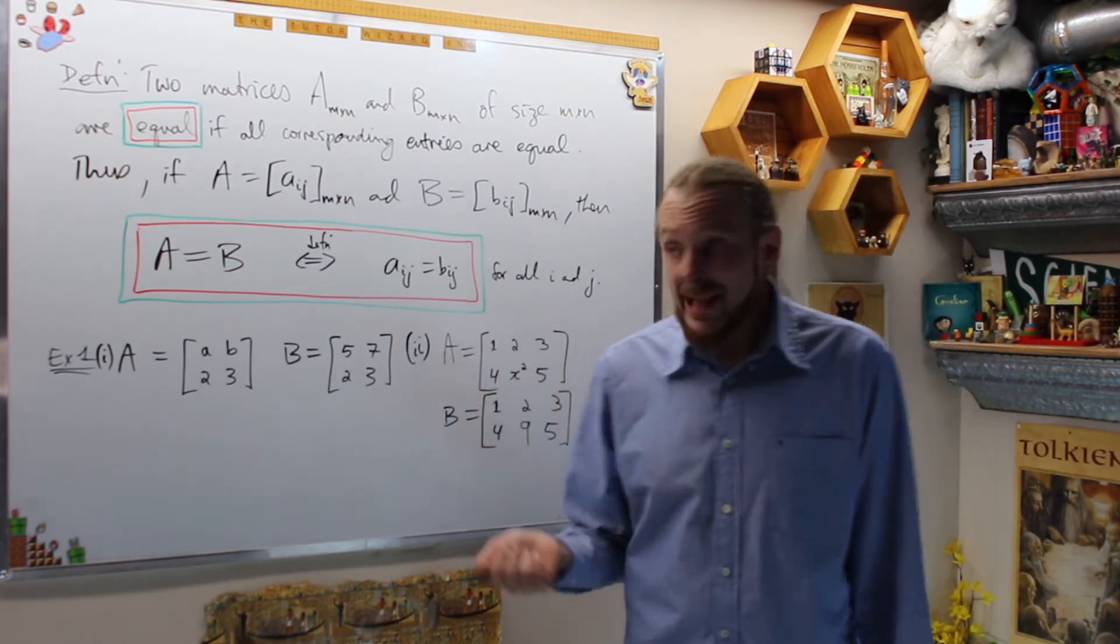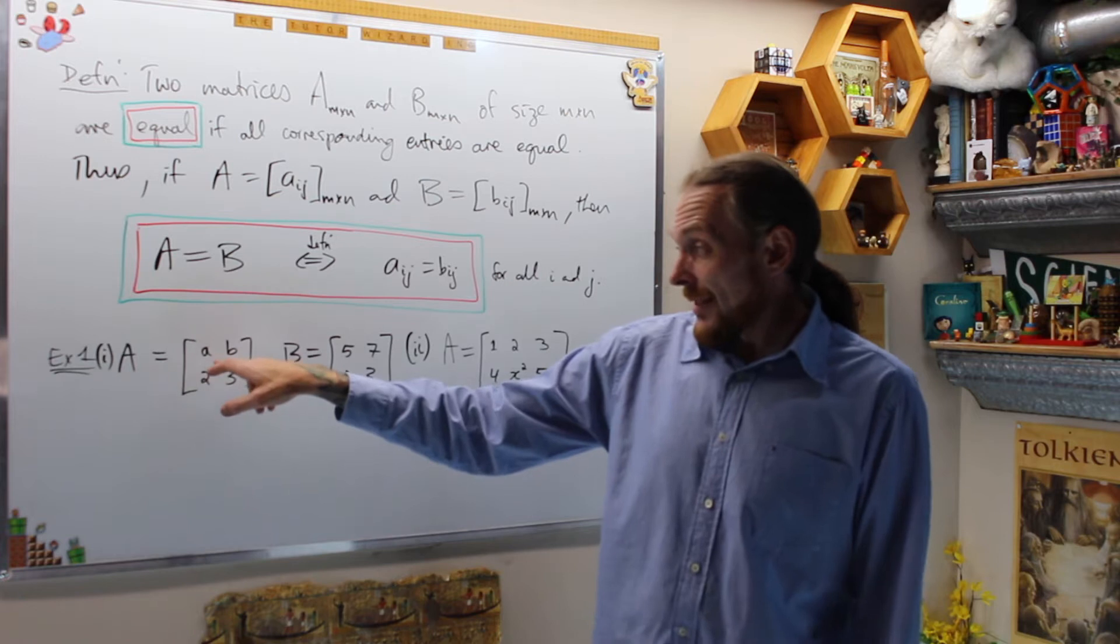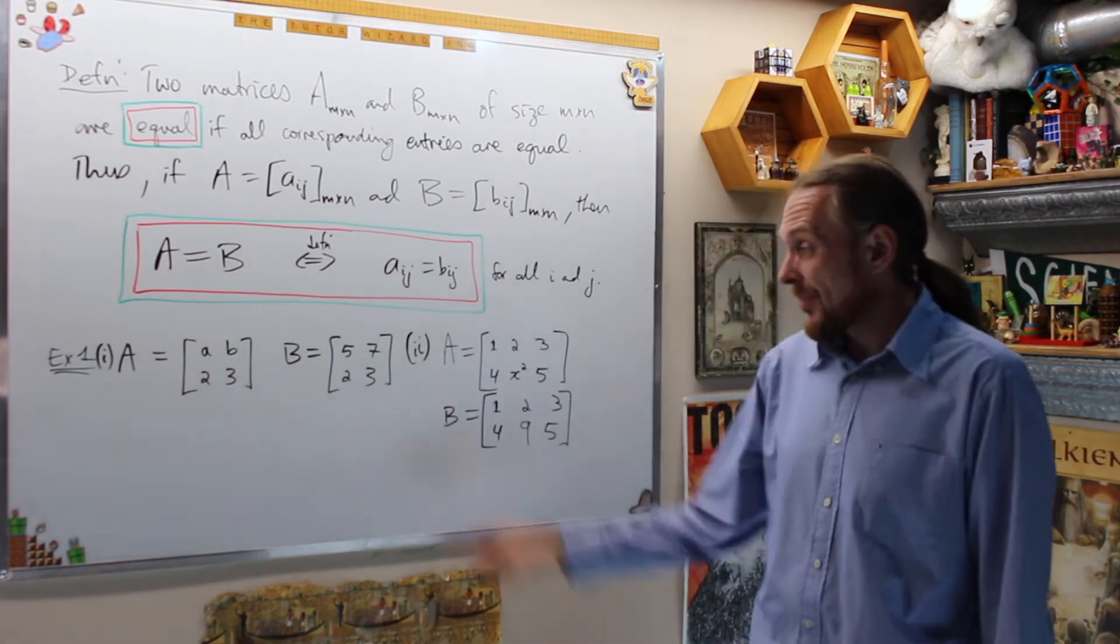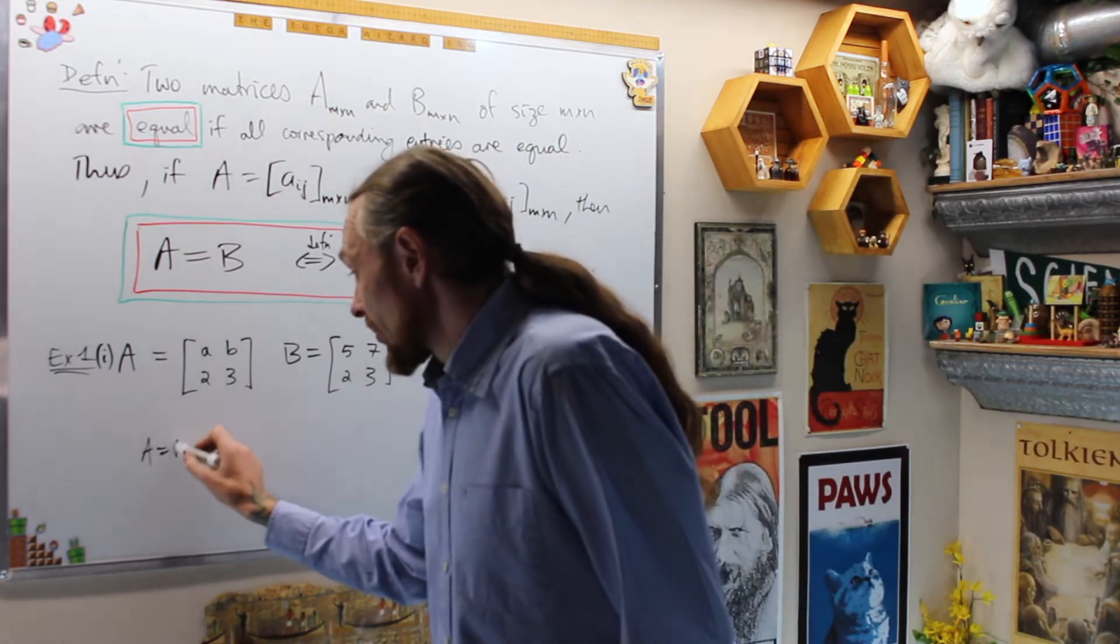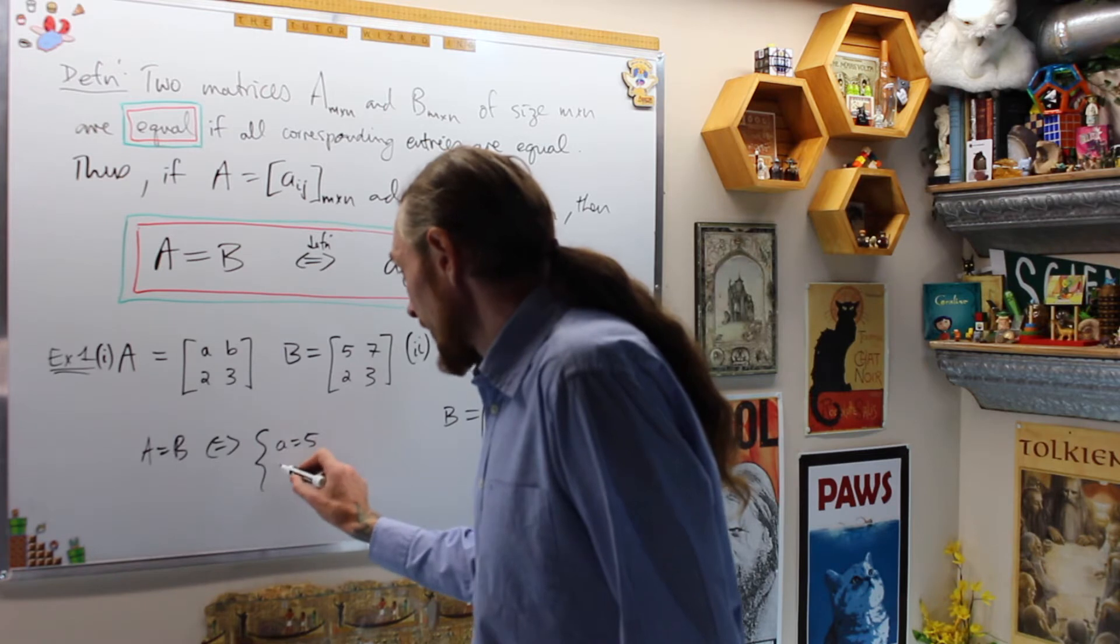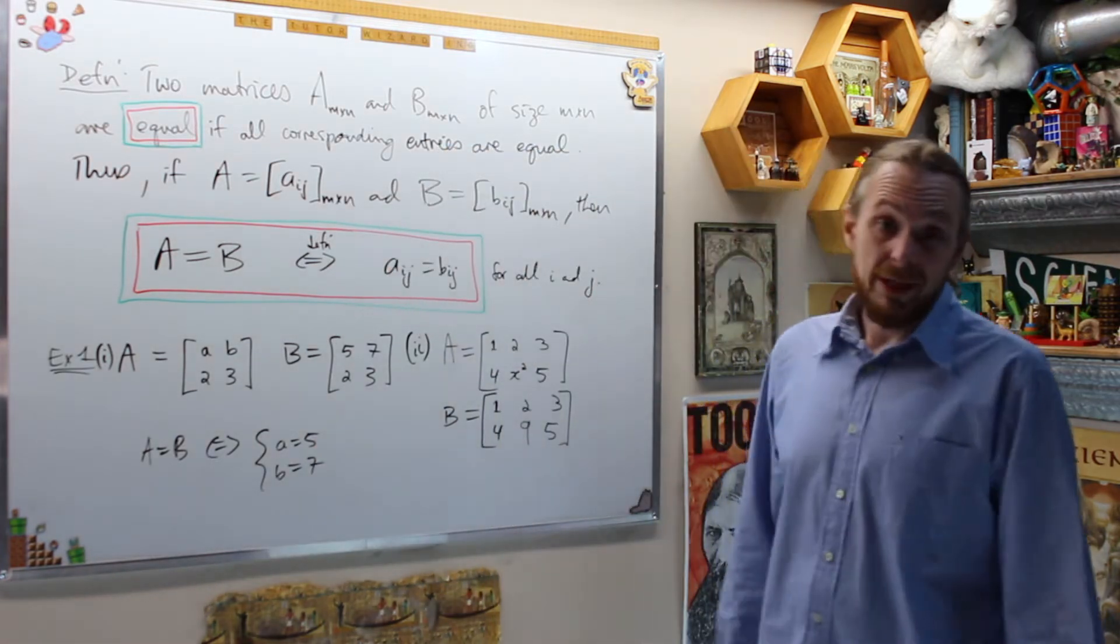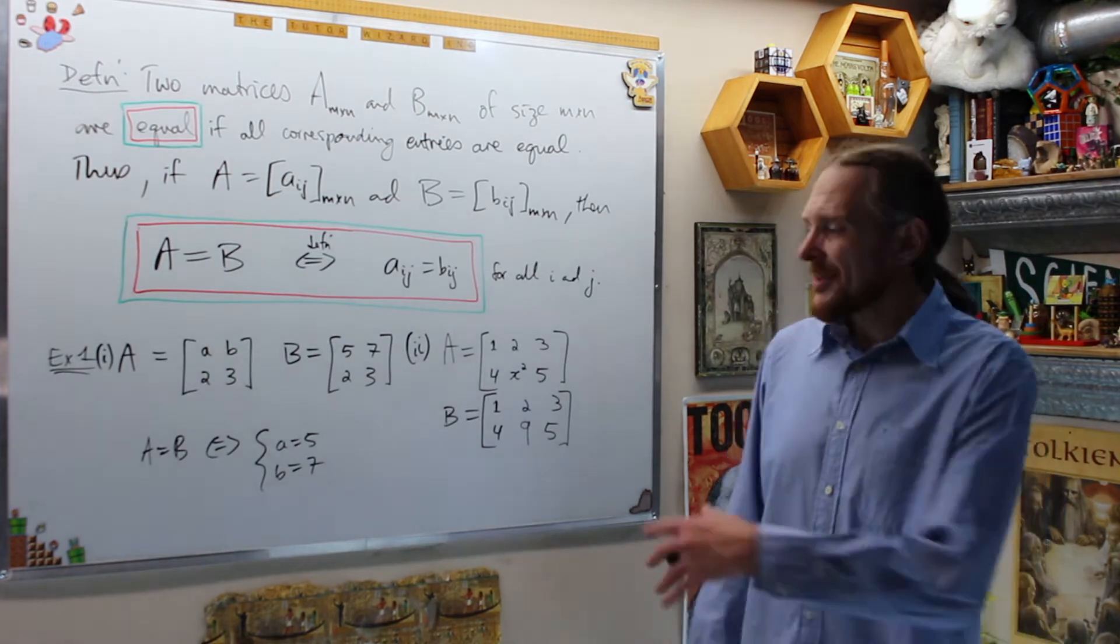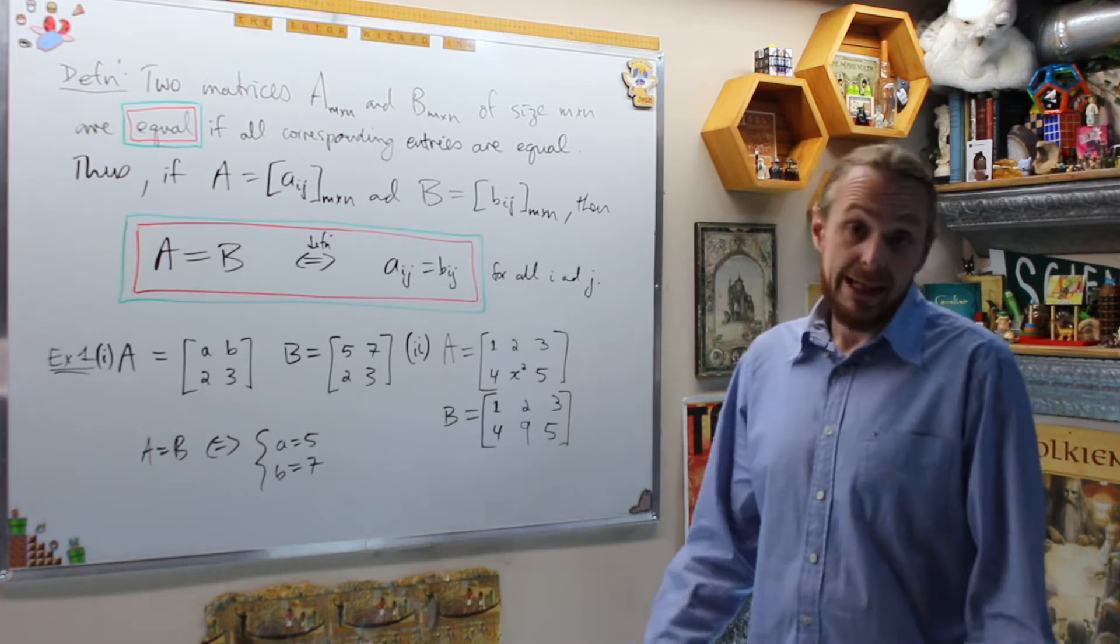Let's take a quick example of that. Example 1 says A for part 1 is [A, B, 2, 3] and B is [5, 7, 2, 3]. This is going to say that A equals B if and only if we have that A equals 5 and B equals 7. We have conditions that we can find when this happens.